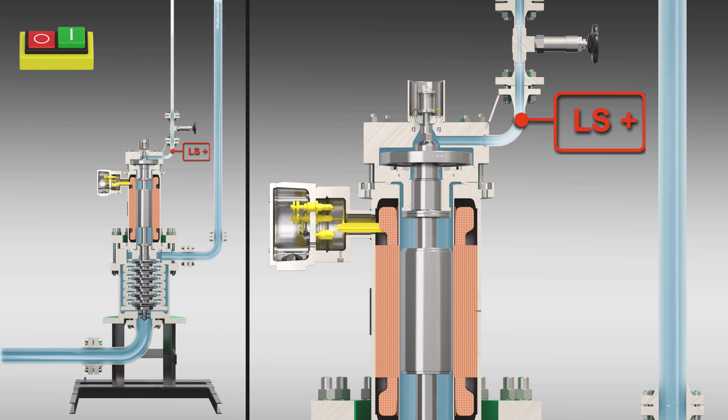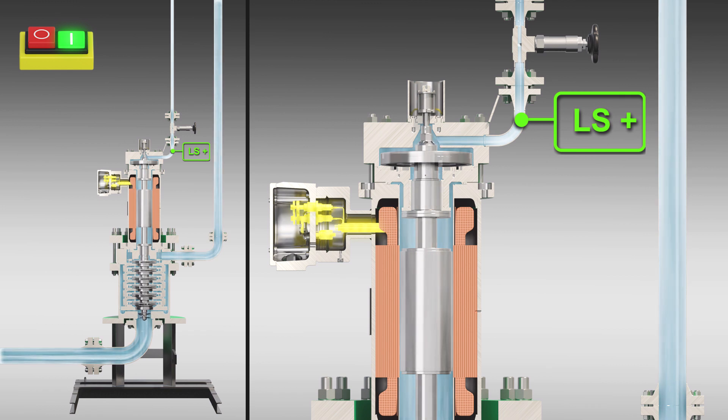The canned motor accelerates to operating speed in a matter of seconds. The partial flow is branched off at the impeller in the high-pressure range and serves to cool the motor and lubricate the slide bearings.